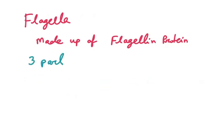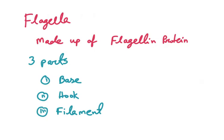Flagella is a thread-like structure which is responsible for chemotactic movement. It has three parts: base, hook, and filament. Only rods have flagella, no cocci has flagella. The spirochetes have a special kind of flagella which is known as axial filament.